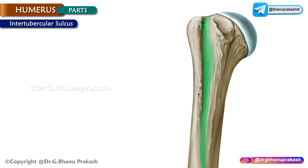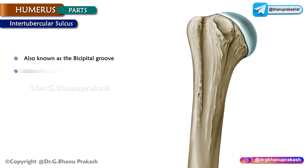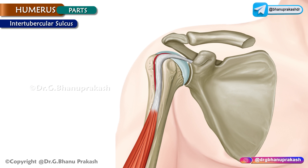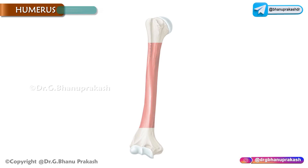The intertubercular sulcus, also known as the bicipital groove, is a depression which lies between the two tubercles. It consists of the medial lip, lateral lip, and the floor. It contains the long head of biceps brachii and the ascending branch of the anterior circumflex humeral artery.